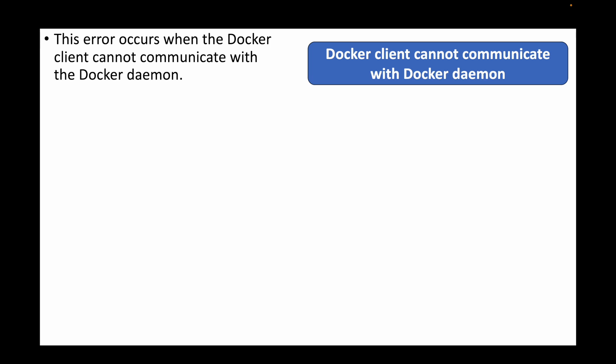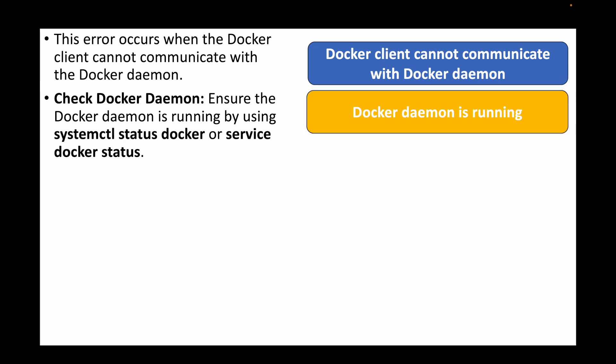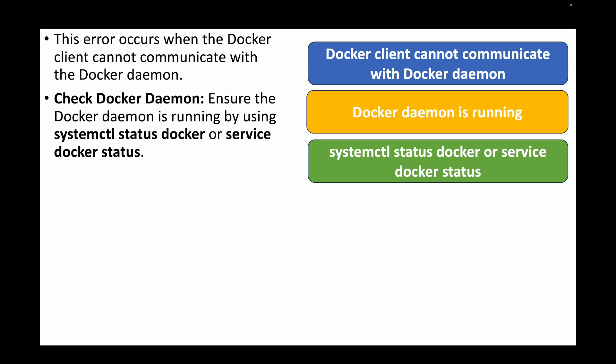In Docker's architecture, we are the Docker client and the Docker daemon processes the commands. Whenever you get this error it means the Docker client is not able to talk to the Docker daemon. We need to make sure the Docker daemon service is running. You can check the status using the `systemctl status docker` command or the `service docker status` command.